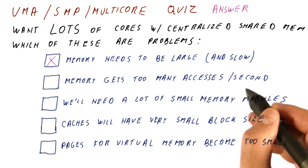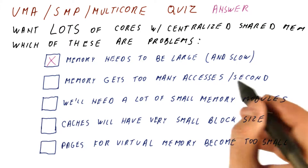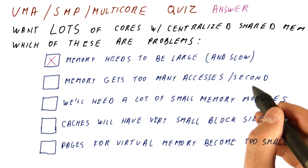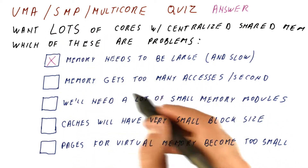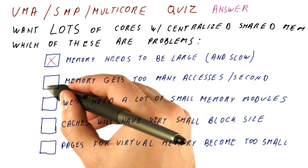That memory will get too many accesses per second, because the cache misses from all of the cores will be going to memory. If one core generates cache misses that the memory can survive doing, two of them it might still survive, but if we have a lot of cores, our memory will probably not be able to keep up with all of those accesses.